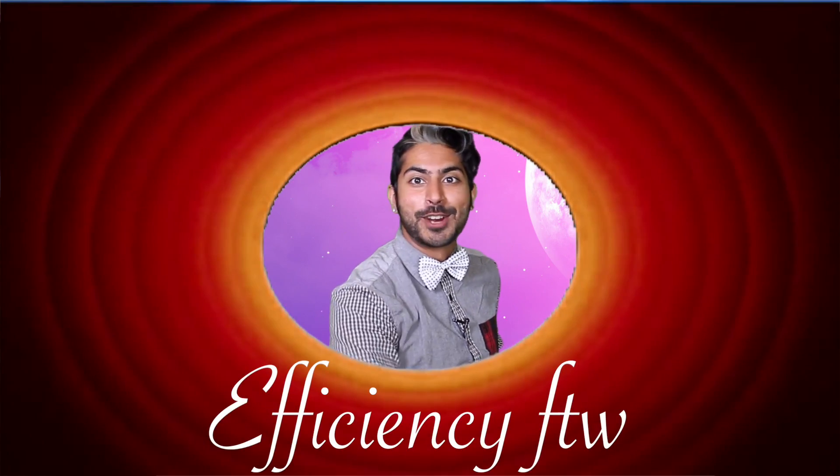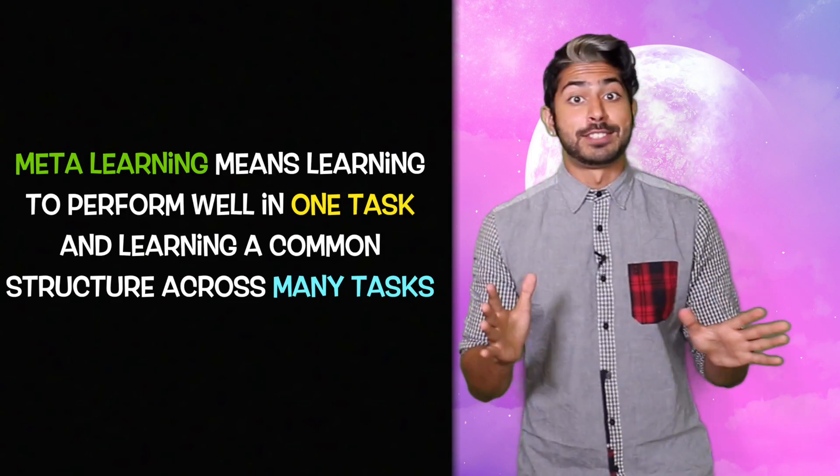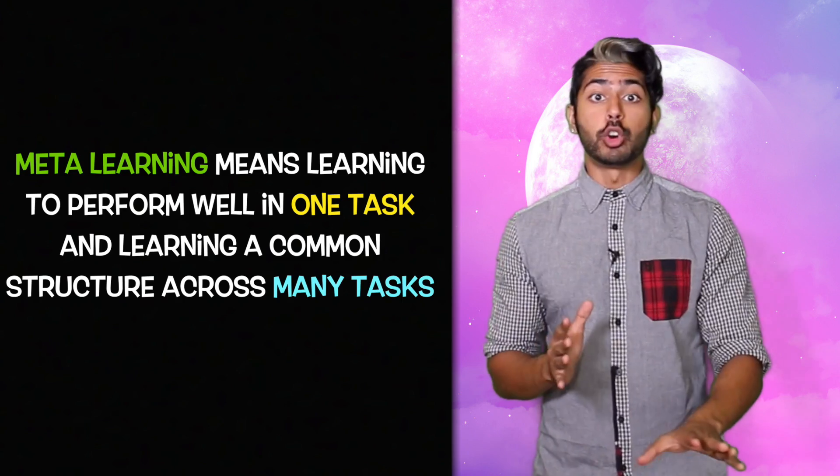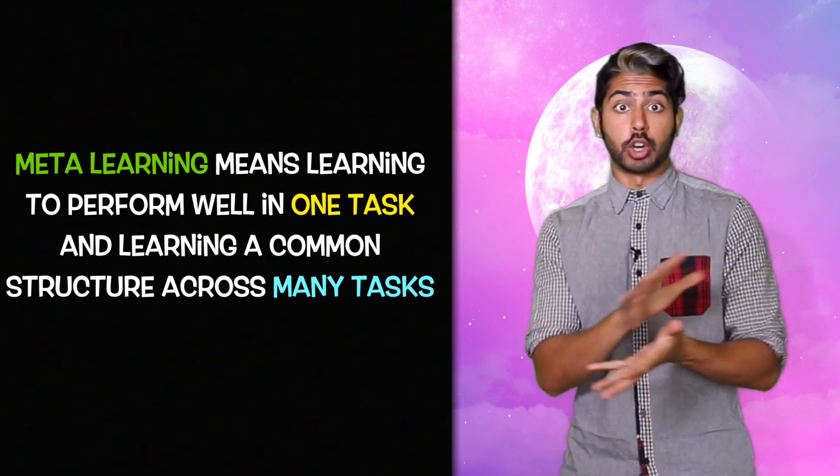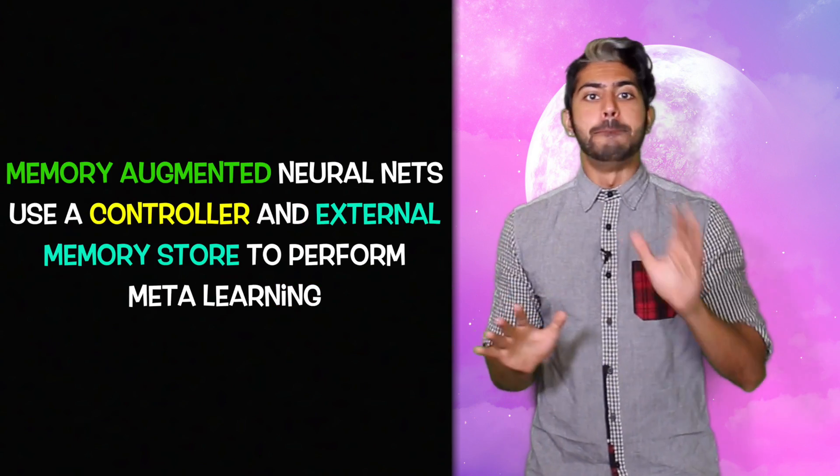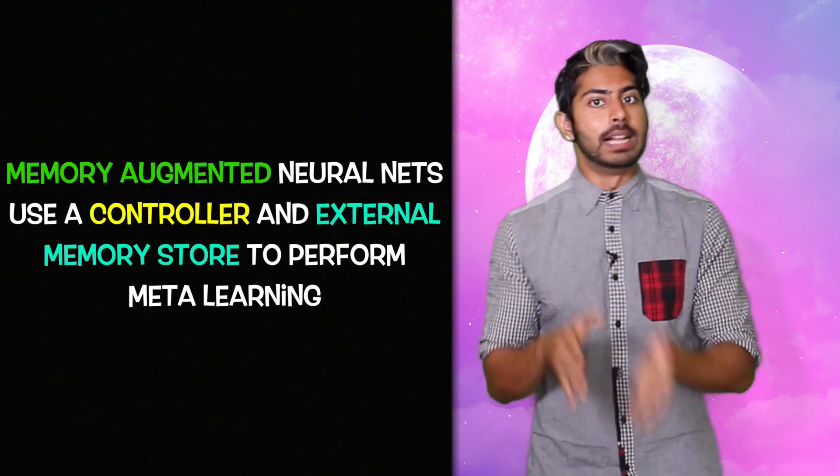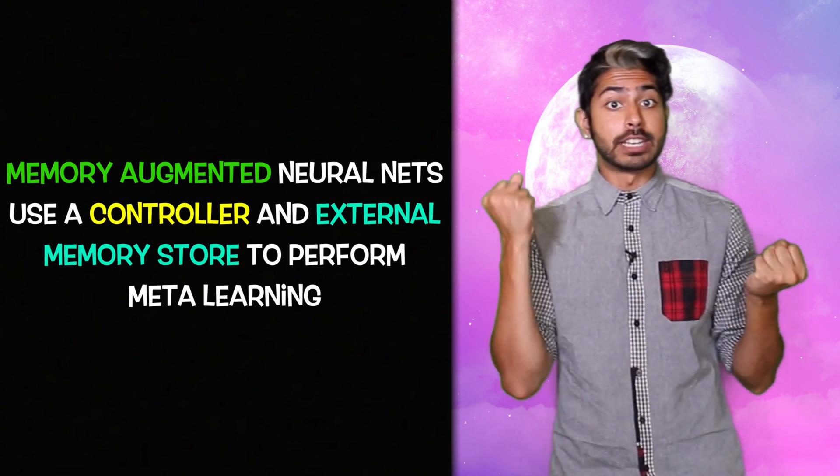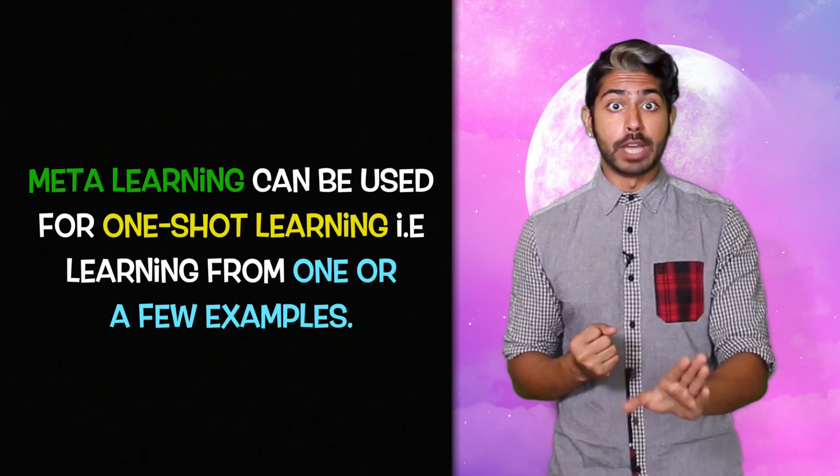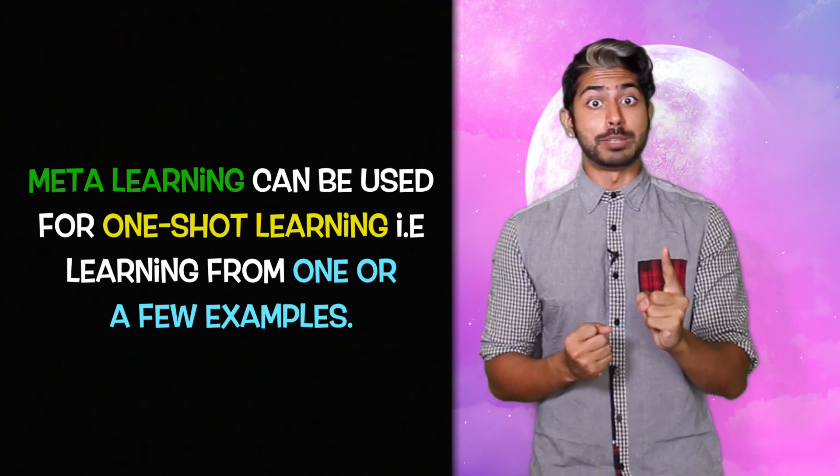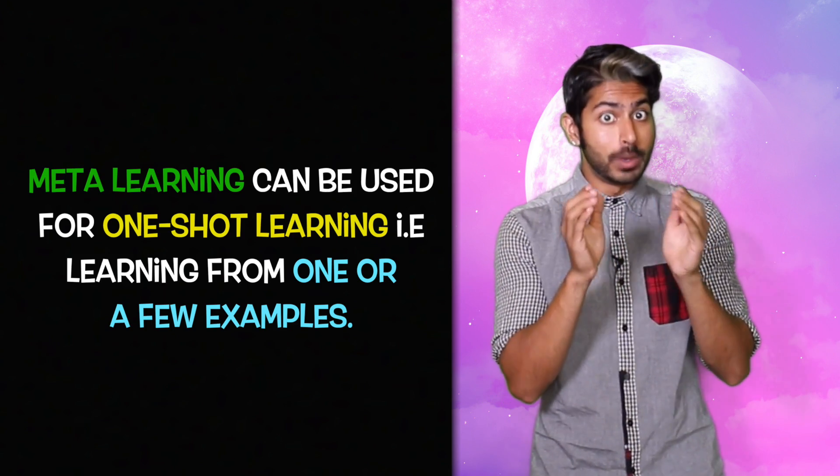And that's all it takes to train, folks. Let's get down to brass tacks. A meta-learning system learns how to perform well at an immediate task and also learns a common structure across many tasks. Memory augmented neural networks like the neural Turing machine use a controller and an external memory store to perform meta-learning. And meta-learning can be a way to achieve one-shot learning, which means learning from one or a few examples.